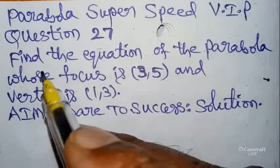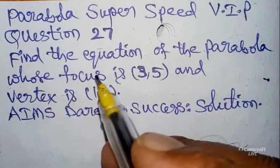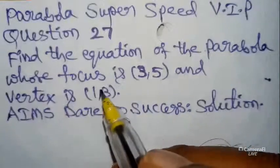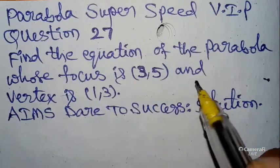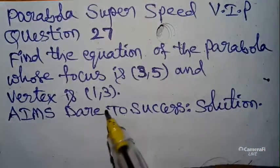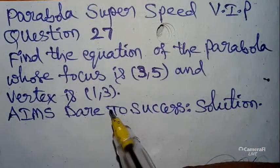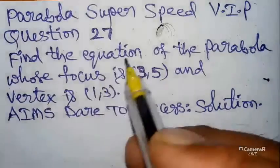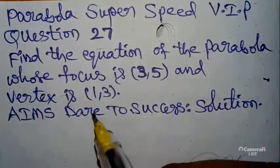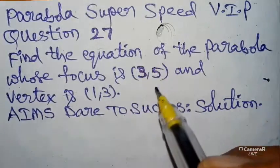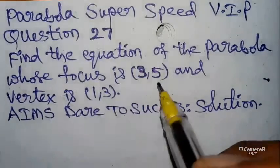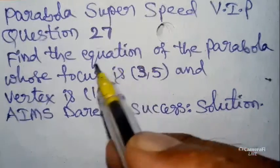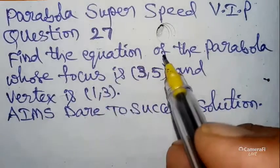Today our interesting and highly demanded question from students: find the equation of the parabola whose focus is (3, 5) and vertex is (1, 3). Here there is no common value in the x-coordinates or y-coordinates from focus and vertex.